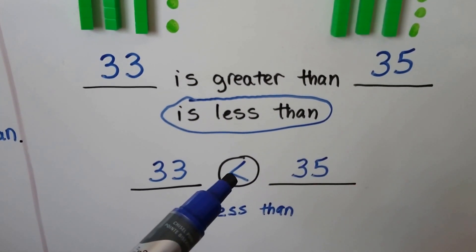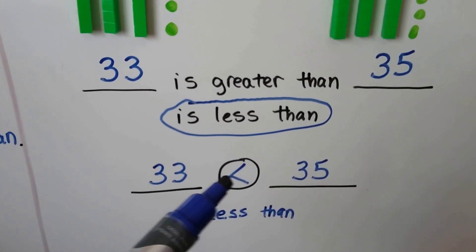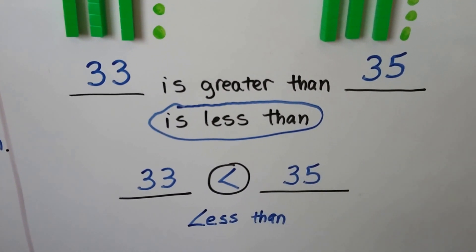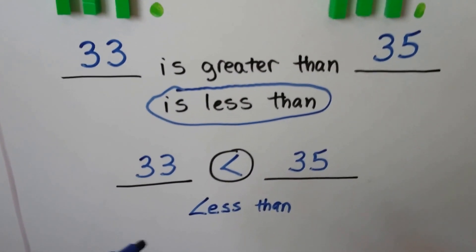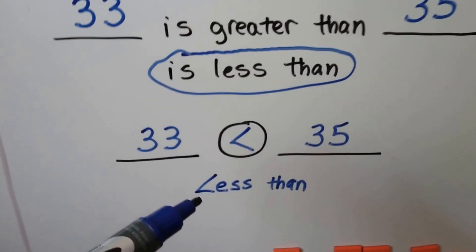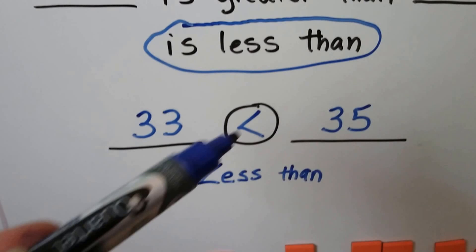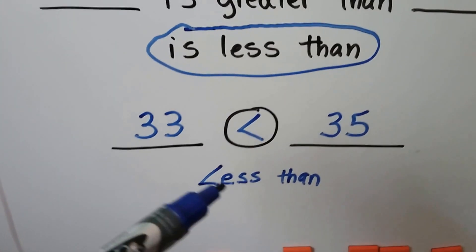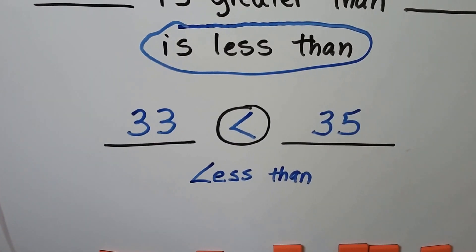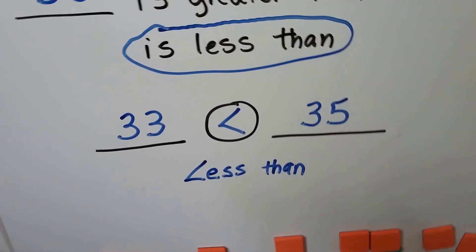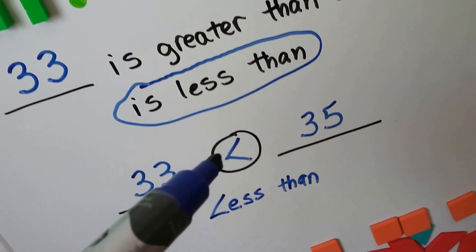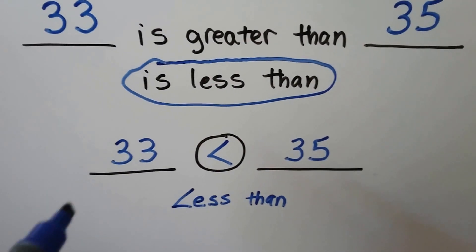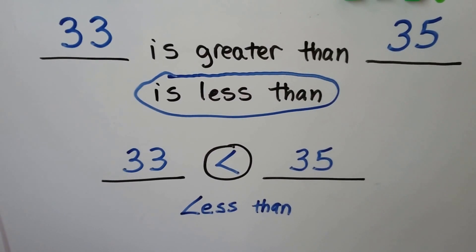We use this symbol — less than — 33 is less than 35. And you can remember that this is the less than symbol because it kind of looks like an L for less than. It's a little crooked. If it was going the other way, it wouldn't be an L.